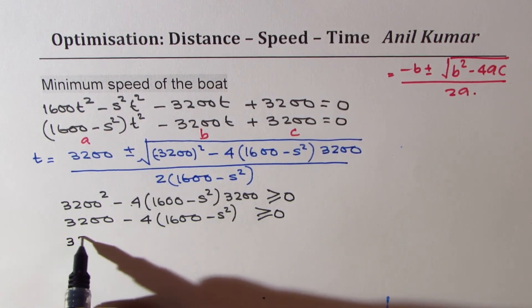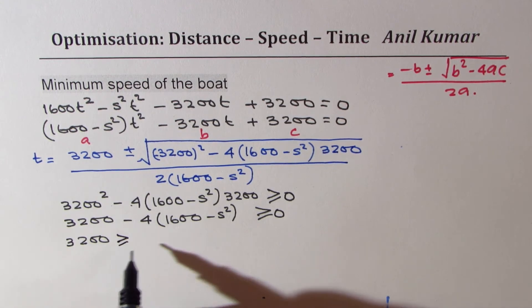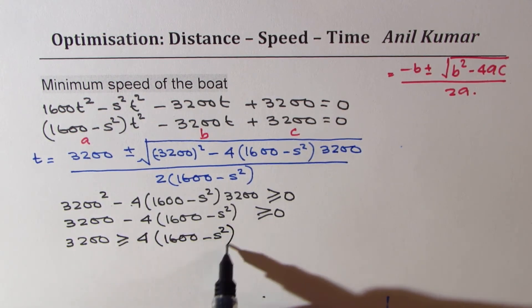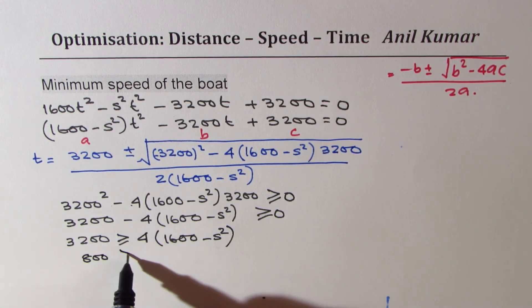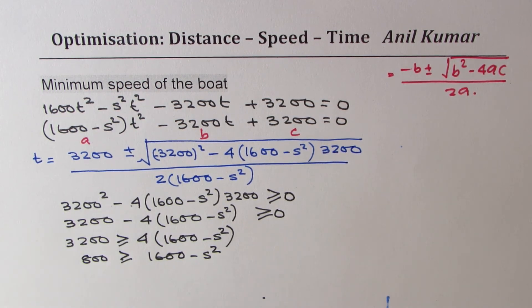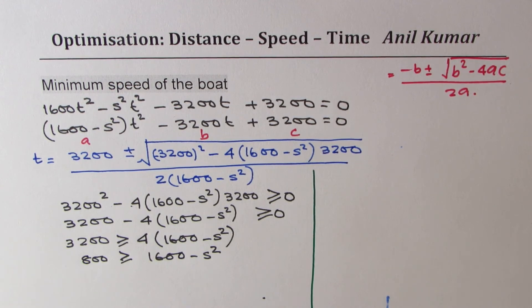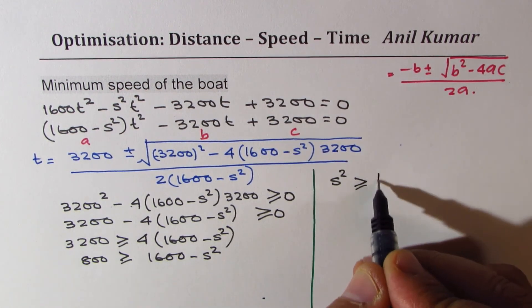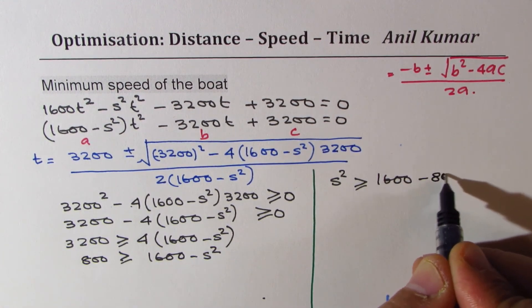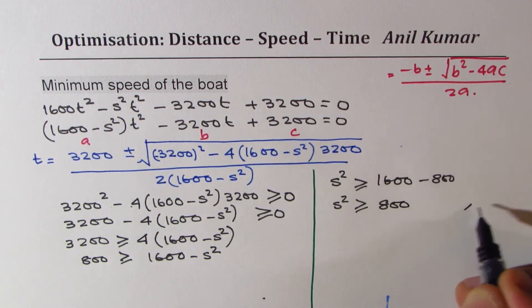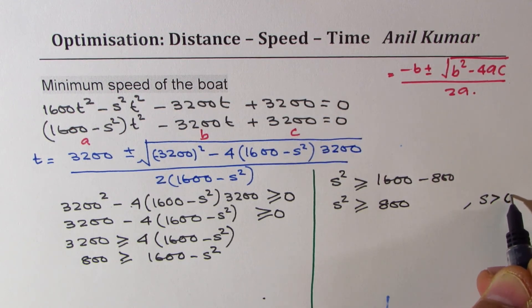Now we can rearrange, so we have 3200 is greater than or equal to 4(1600-s²). Dividing by 4, we get 800 is greater than or equal to 1600 minus s². Now we can bring s² to the left side and solve further. S squared is greater than or equal to 1600 minus 800, which gives us s² being greater than or equal to 800.